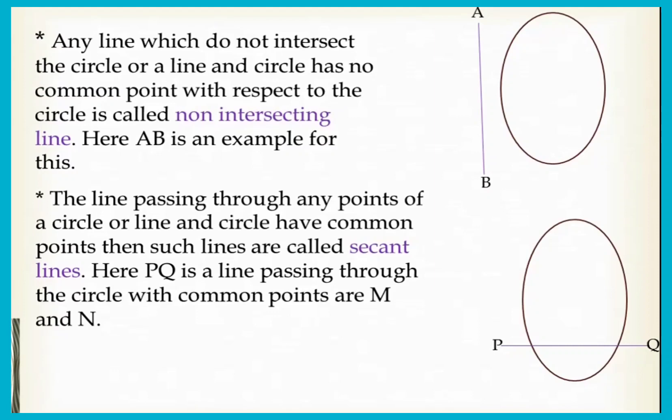The line passing through two points of a circle, or a line and a circle having two common points, such lines are known as a secant. Here PQ is a line passing through the circle with the common points M and N. Now let us move to the tangent to a circle.